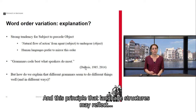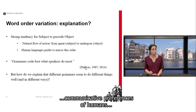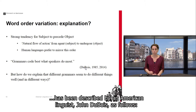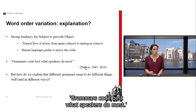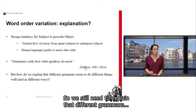A possible explanation is that there is a natural flow of action from the agent — the instigator of an action, typically the subject — to the undergoer, typically the object. Human languages apparently prefer to mirror this natural flow in their grammatical structure. This principle has been described by American linguist John DuBois as: 'Grammars code best what speakers do most.' Yet we see a lot of variation, so we still need to explain that different grammars seem to do different things in different ways.